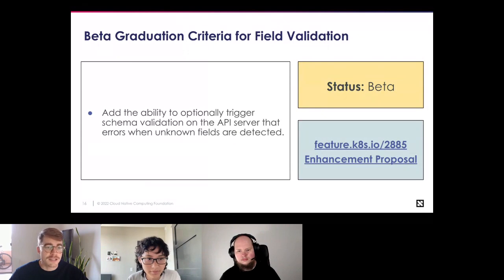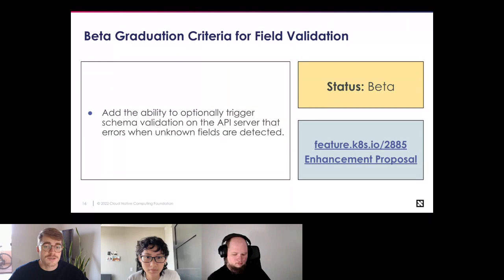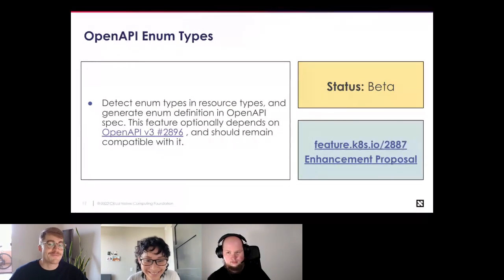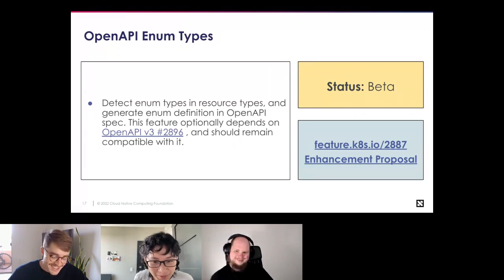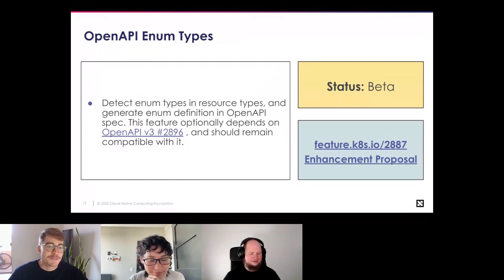Field validation is graduating to beta. This adds the ability to optionally trigger schema validation on the API server that errors when an unknown field is detected. If a client sends a create, update, or patch request with fields not valid in the Kubernetes resource, the server can be instructed to fail. This removes client-side validation from kubectl while maintaining the same functionality of erroring on requests with unknown or invalid fields.